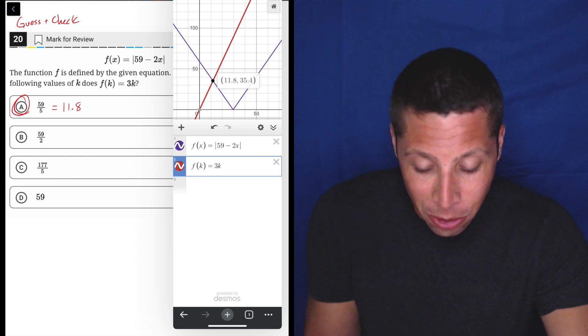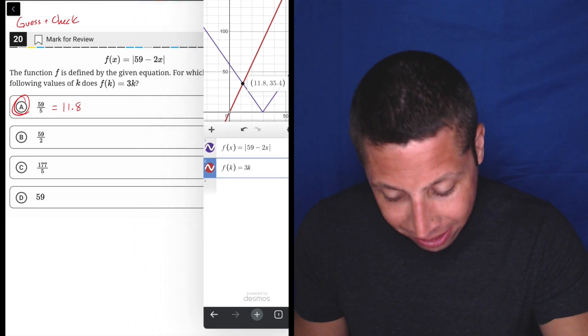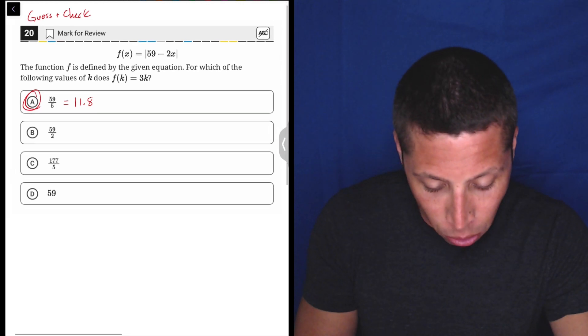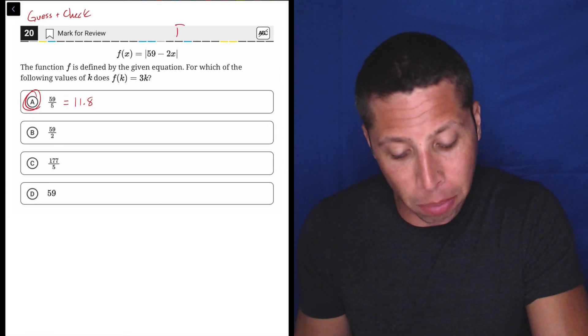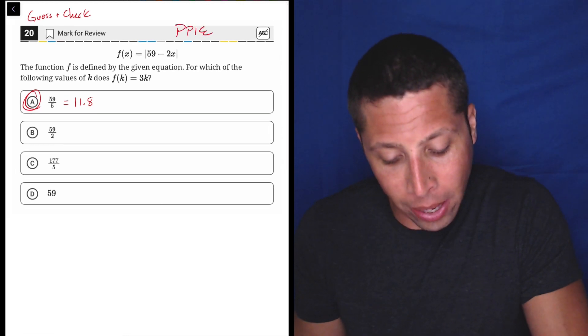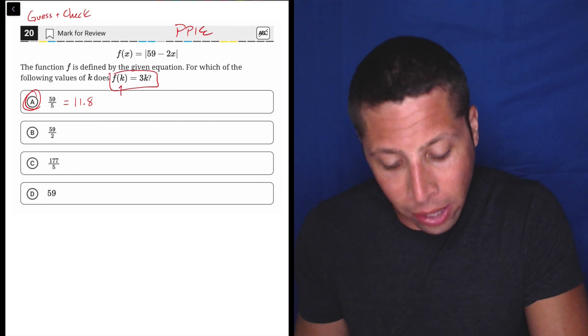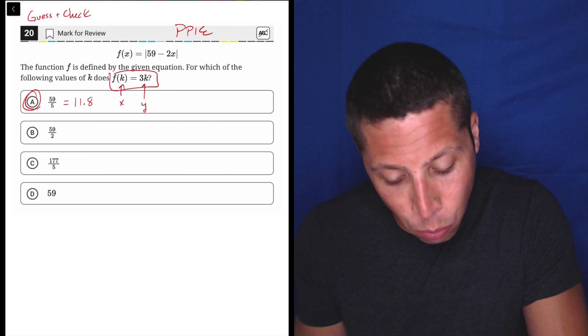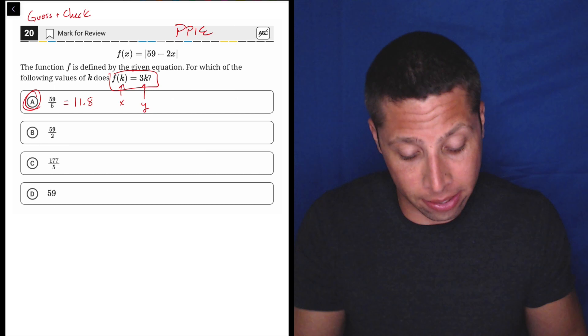I really like that method because otherwise absolute value can kind of be a pain. I'm going to show you the algebra, though, because it's not so bad considering we're at question 20. So what we would basically do here is a version of plug points into equations.